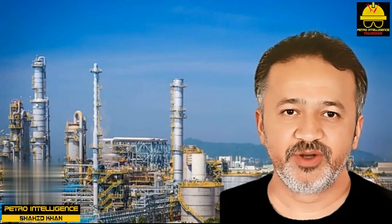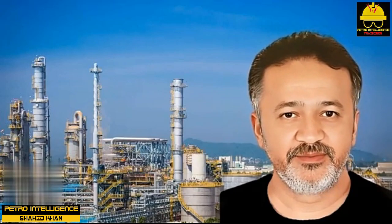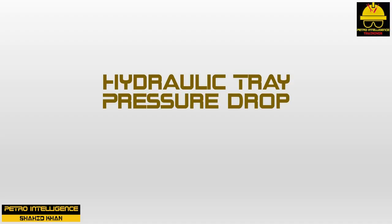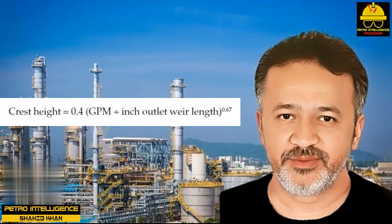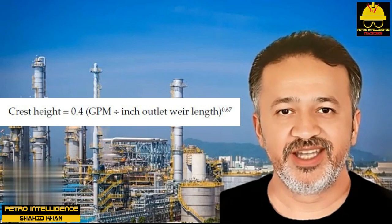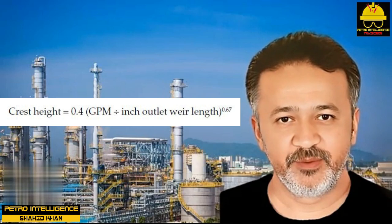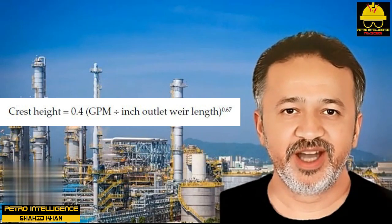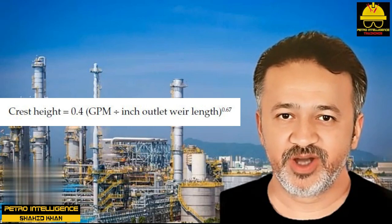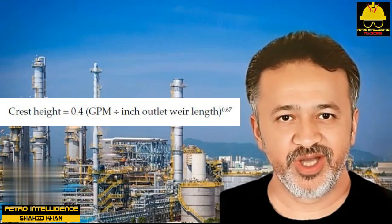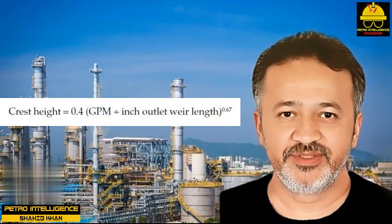0.6 to 0.95 for various valve tray caps. Hydraulic tray pressure drop: the weight of liquid on a tray is created by the weir height plus the crest height. We have defined in a previous video that the crest height is in inches of clear liquid, where crest height equals 0.4 GPM divided by inch outlet weir length, raised to the power 0.67.